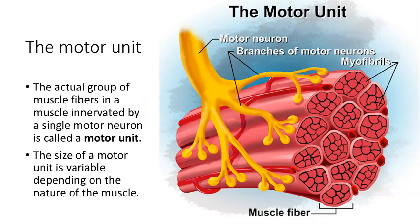The size of a motor unit is variable depending on the nature of the muscle. A small motor unit is an arrangement where a single motor neuron will supply a very small number of muscle fibers in a muscle. That permits very fine motor control of that muscle.